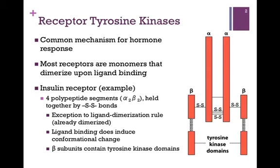This is a very common mechanism for hormone response. Most of these receptors are monomers that dimerize once the ligand binds, and as is true for every signaling cascade, it's the binding of the ligand to the receptor that initiates the signal. Let's look at the insulin receptor as an example. We have a cartoon representation of its structure on the right. As you can see, there are four separate polypeptide chains — four subunits, two alphas and two betas.